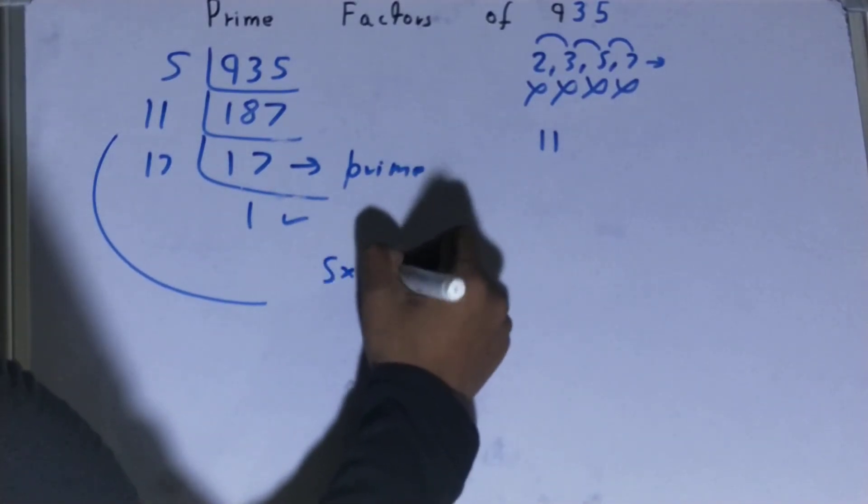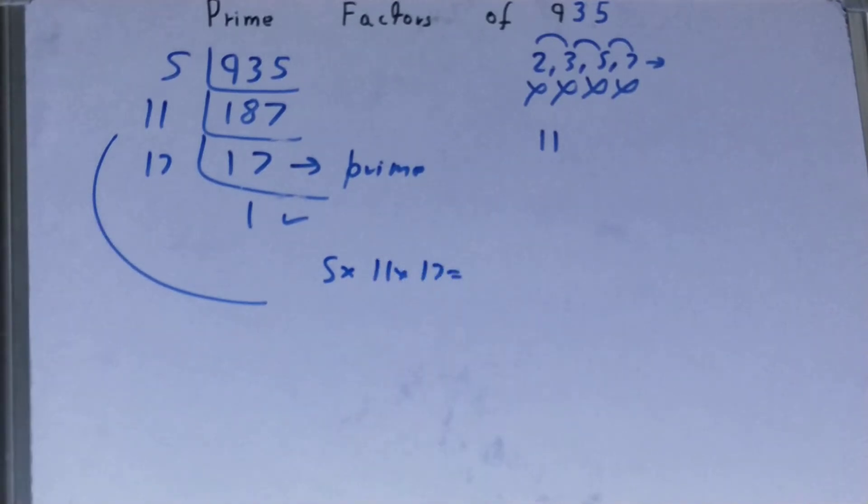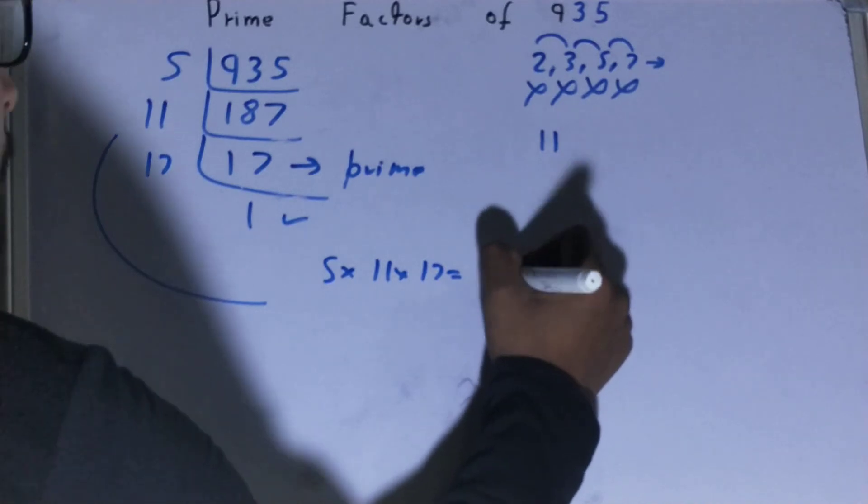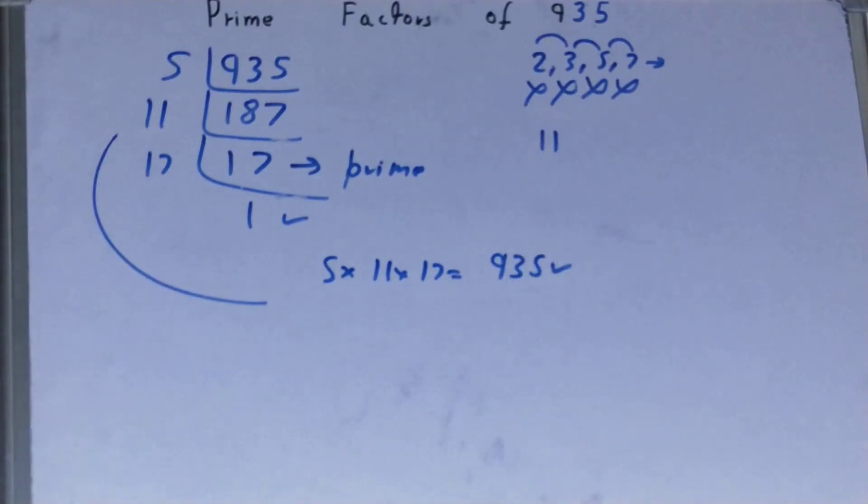That is 5 × 11 × 17. If you want to check whether it is right or not, you can multiply it. If on multiplying you get the number back again, that means your calculation is correct.